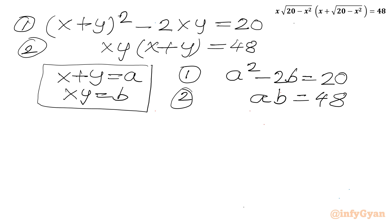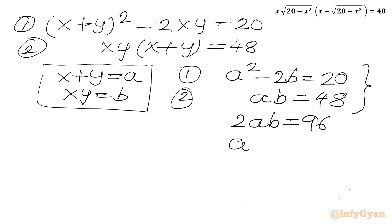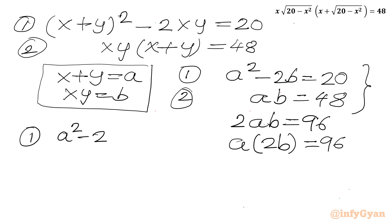Now the question is looking easier. We can multiply equation 2 by 2, giving 2ab equal to 96, or a times 2b equal to 96. From equation 1, a squared minus 2b equals 20, so 2b equals a squared minus 20.